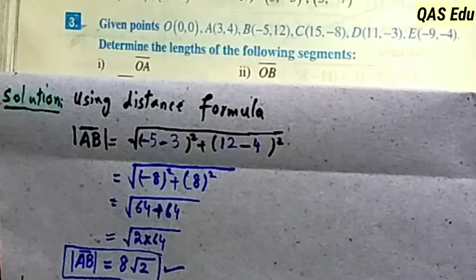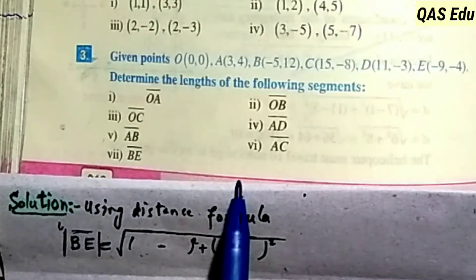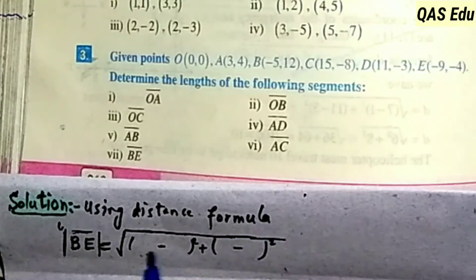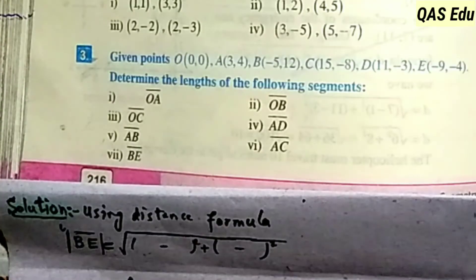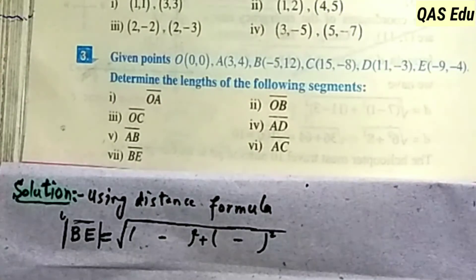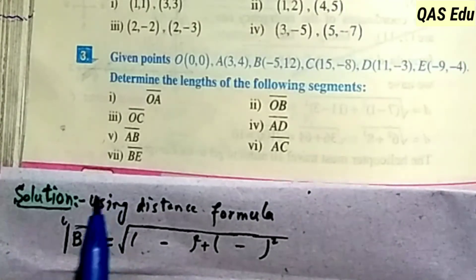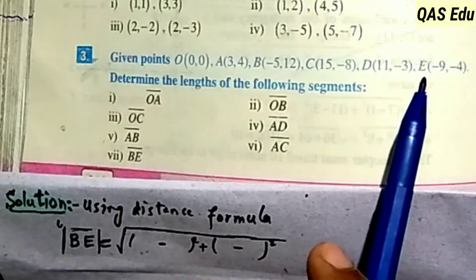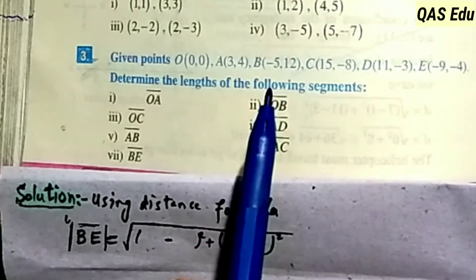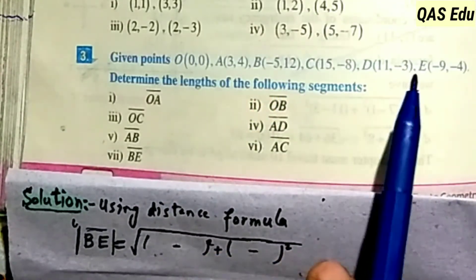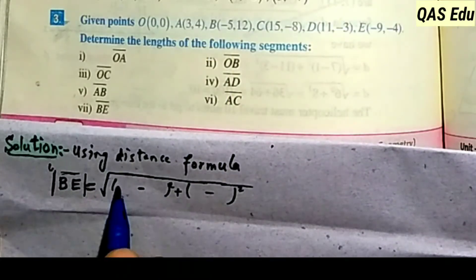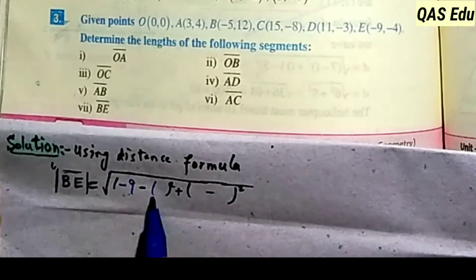The last part: B and E coordinates. B coordinates are (-5, 12) and E coordinates are (-4, -9). We apply the distance formula with these x and y coordinates.